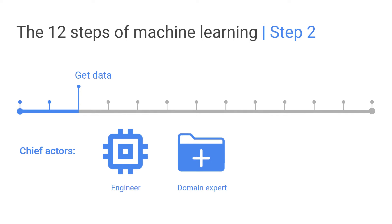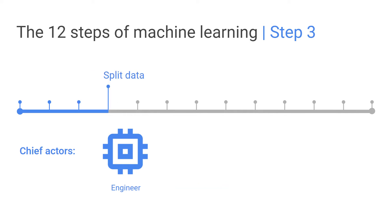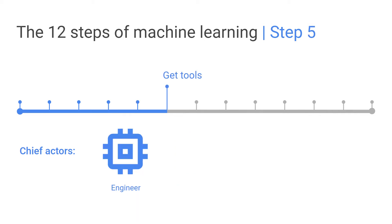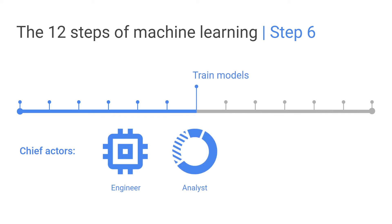Step two: get your data. Step three: split that data. Step four: look at some of your training data. Step five: get some tools. And then step six: actually train your models.